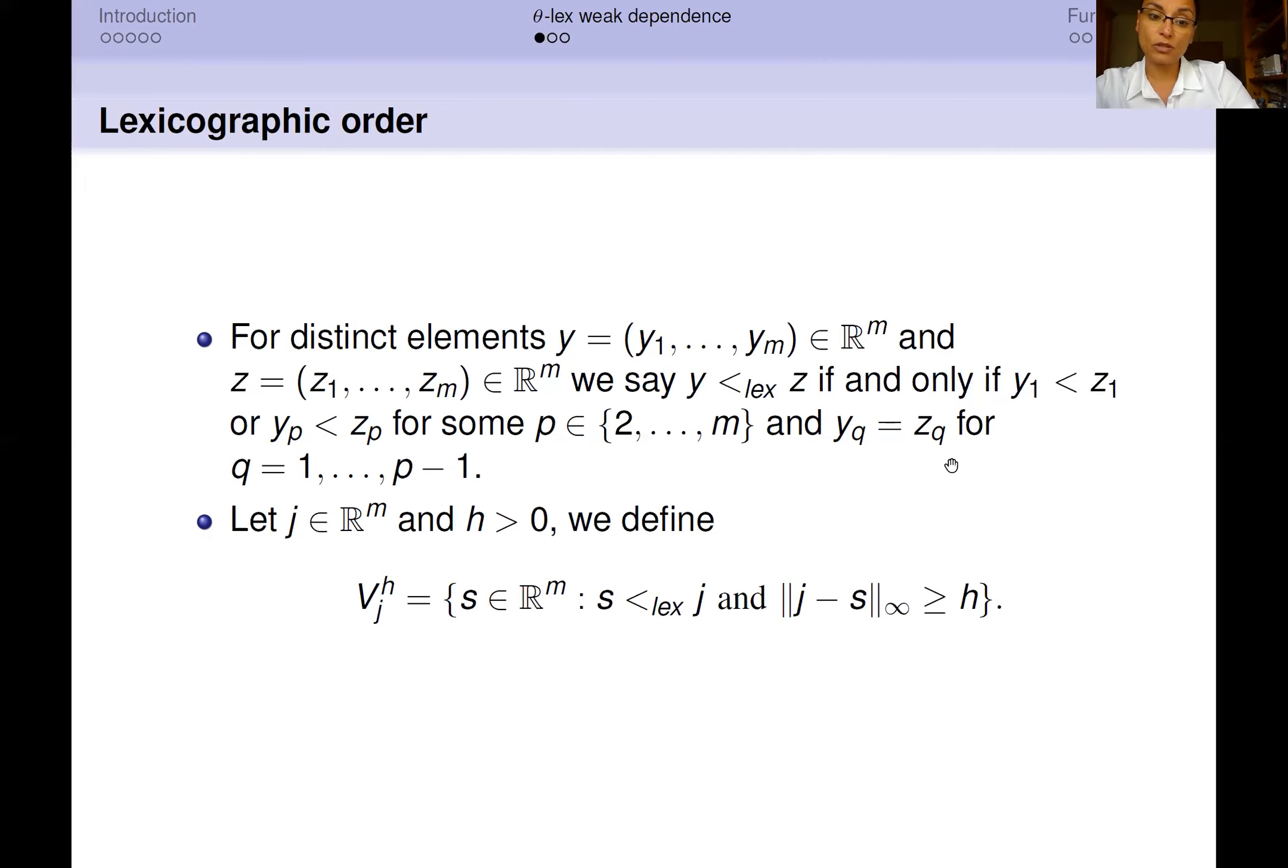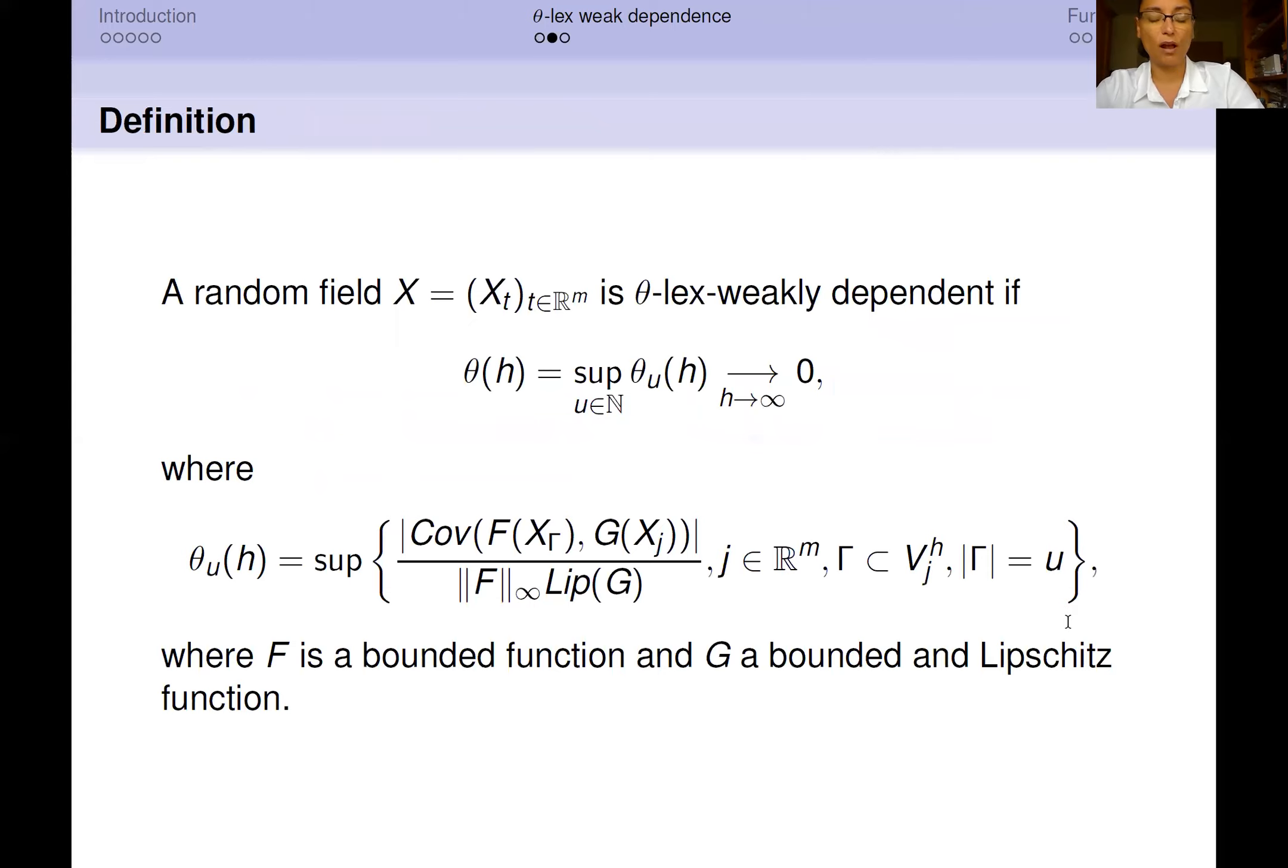Once we have defined the lexicographic order, we need another small definition. Let us consider a point j in ℝ^M and the constant h greater than 0. We define the set B_j^h as the set of arguments s in ℝ^M such that they are lexicographically less than j and at distance from j at least h. Now we are ready for the definition of a θ-lex weakly dependent random field.